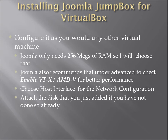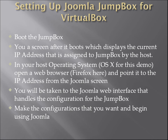The Joomla team recommends taking advantage of the VTX/AMD-V features within VirtualBox to get better connection speed. Also choose Host Interface Network Configuration, which tells the VM to talk to your host machine, and attach the disk to the machine. When you boot the Jumpbox, you'll see a screen displaying the current IP address assigned to it by the host. Then open Firefox on your host OS — whether OS X or Windows — point it to that IP address, and you'll be taken to the Joomla web interface to handle configuration. Make sure the configurations you want are set up and then begin using Joomla.